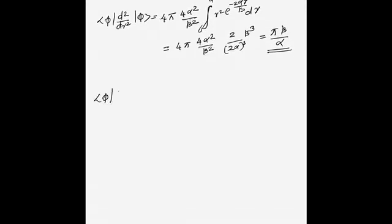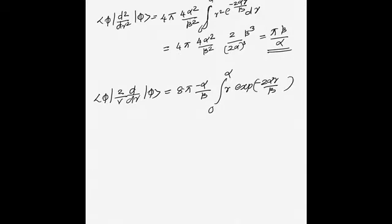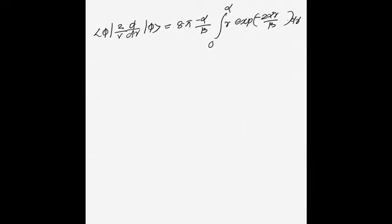For the term ⟨φ| (2/r) d/dr |φ⟩, this becomes 8π·(−α/β) ∫₀^∞ r · e^(−2αr/β) dr. Applying the standard integral with n = 1 and a = 2α/β, the result is −2πβ/α.